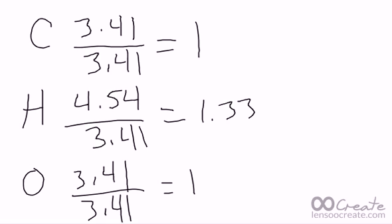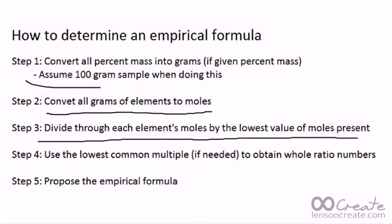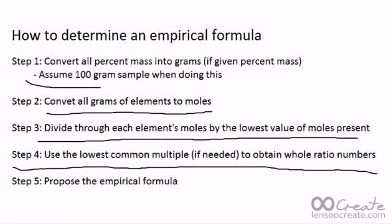So that's the next step. We have these numbers here. If these were all whole ratio numbers, we could stop at this point. However, they're not, because 1.33 is not a whole ratio number. That's got a decimal. It's a fraction number if we converted it into a fraction. So what we need to do is find the lowest common multiple. Use the lowest common multiple for step 4, if needed, which we do for that 1.33, to obtain the whole ratio numbers, and then we'll propose the empirical formula.